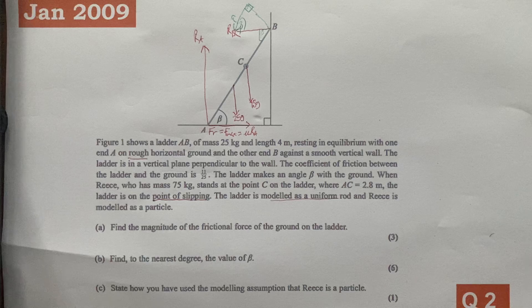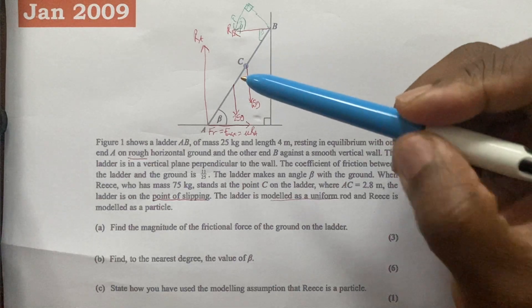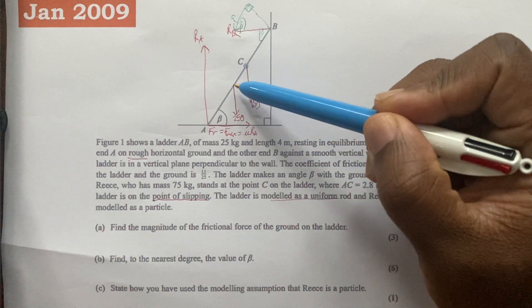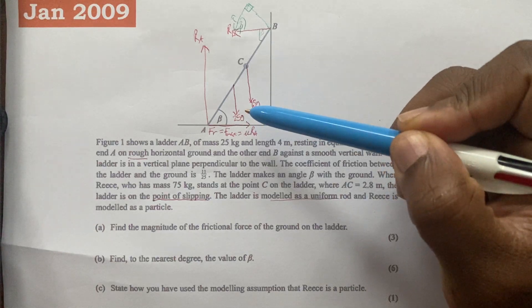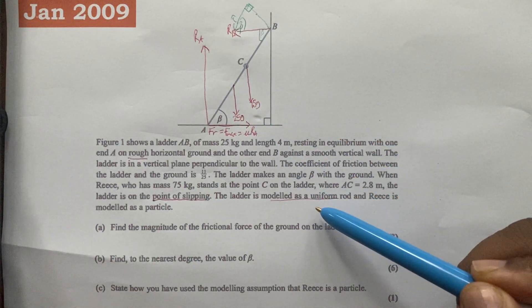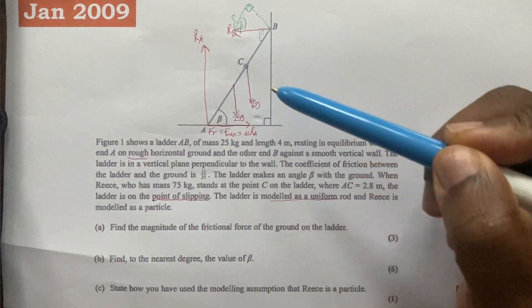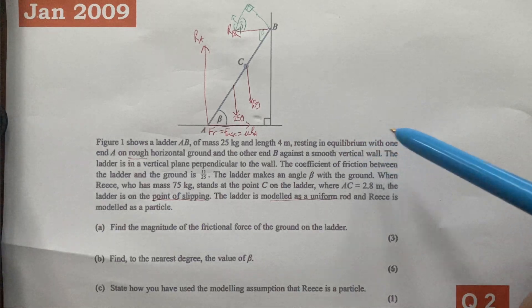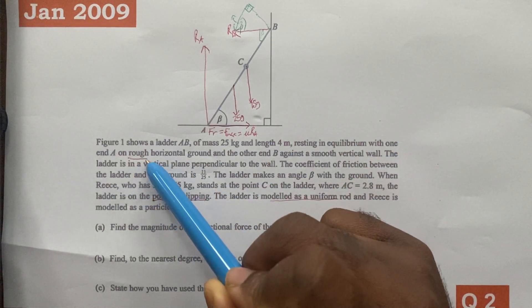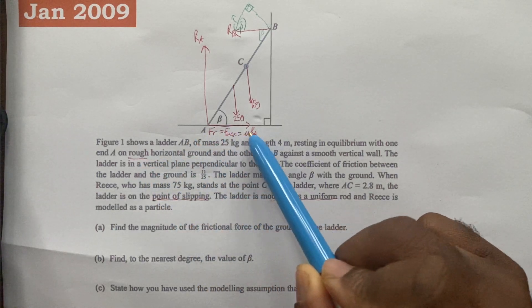Figure one shows a ladder AB of mass 25 kilograms. The weight of the ladder is going to be 25G, and because it's a uniform rod that will act down the middle or the center of the ladder. We're also told that it rests in equilibrium with one end on rough horizontal ground, so once we see the word rough we know that friction is present.